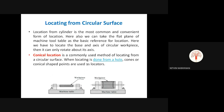Locating from circular surface: location from a cylinder is the most common and convenient form of locating. We need to locate the base and axis of the circular workpiece — it can only rotate about its axis. One common method is conical location, where conical-shaped points are used as locating devices. In the first case, a conical locator is placed inside the circular workpiece; in the second case, the cones are inverted and used on the outside of the circle.